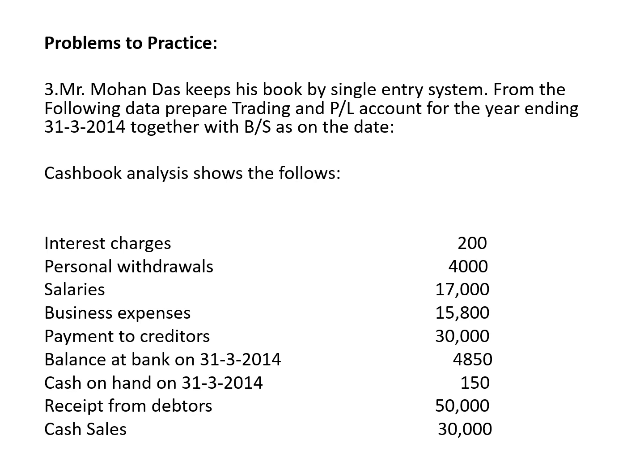Balance at bank on 31st March 2014 — this closing balance goes to cash account as 'by balance carried on' and should be taken to the balance sheet. Similarly, cash on hand as on 31st March 2014 — 150 — this is the closing balance of cash in hand. These two closing balances will appear in the cash account as well as in the balance sheet. Receipt from debtors — 50,000 — will go to cash account debit side and debtors account.